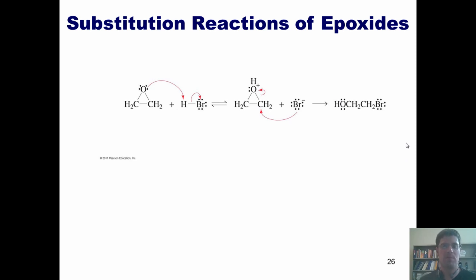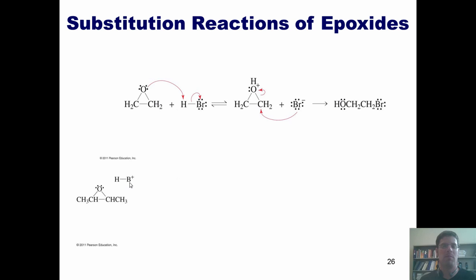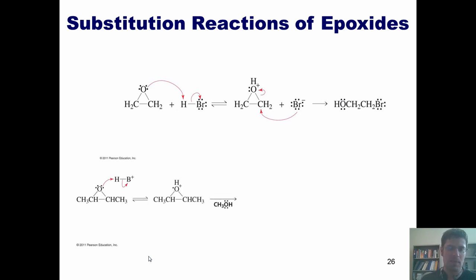Let me show you another example. I've got this epoxide interacting with any type of acidic proton attached to some generic base B. This B+ is not boron — it's just a symbol meaning any positively charged generic base that has an acidic proton. The lone pair of electrons on the oxygen can reach up, form a bond with that hydrogen, push these electrons into the base to neutralize its positive charge, and give a positively charged intermediate.